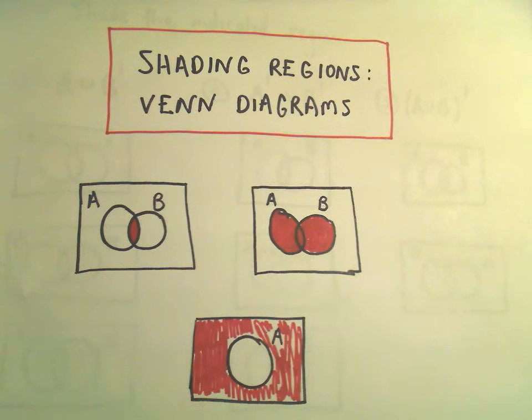Alright, in this video I want to talk about shading regions for Venn diagrams. In this video I'm just going to use Venn diagrams involving two sets A and B. Sometimes you see these questions and they want you to basically shade regions.